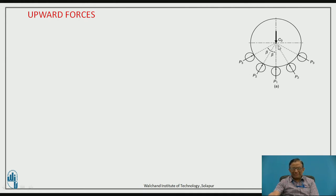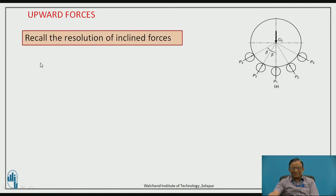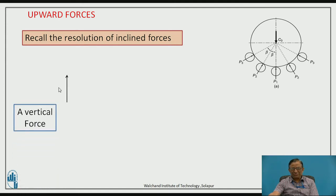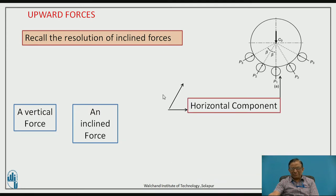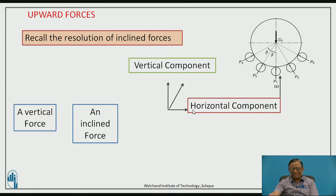As the load is acting downward, the load acting on the balls will be shown as P1, P2, P3, etc. P1 is acting vertically upward whereas P2 and P3 are acting as inclined forces. We have to resolve into two components — vertical and horizontal — for the inclined forces.